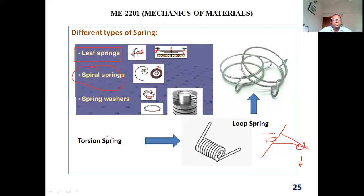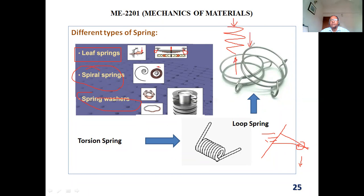Then there is the spring washer, or washer spring. Its shape is conical. If you apply force, it will react upward and move in both directions. It squeezes, you remove the load, it comes back to its position. That is the spring washer — this view shown is the section view.